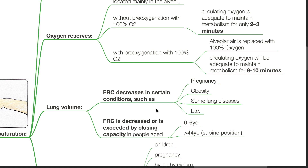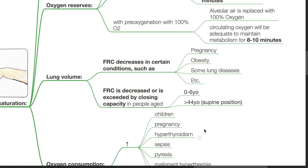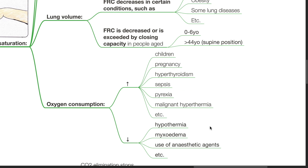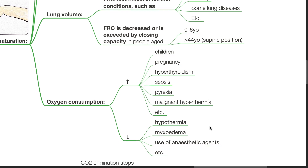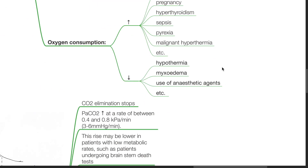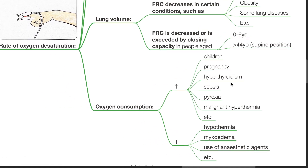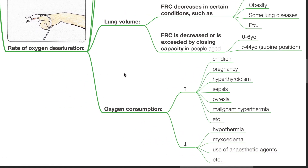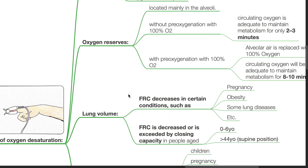Oxygen consumption increases in children, pregnancy, hyperthyroidism, sepsis, pyrexia, malignant hyperthermia, etc., and decreases in hypothermia, myxedema, and use of anesthetic agents. The rate of oxygen desaturation will increase in situations of increased oxygen consumption, decreased lung volume, and decreased oxygen reserves.